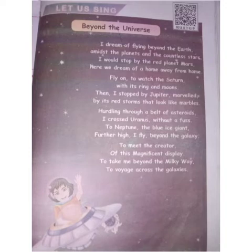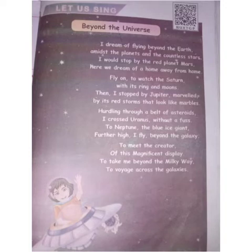I dream of flying beyond the earth, amidst the planets and the countless stars. I could stop by the red planet Mars. Here we dream of a home away from home. Fly on to watch Saturn with its rings and moons. Then I stop by Jupiter, marvelled by its red storm that looks like marbles. Children, these eight lines will be your memory poem. Please learn it well and I will ask any four lines in this.